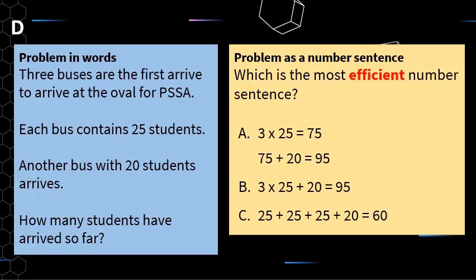Here's my last word problem: three buses are the first to arrive at the oval. Each bus contains 25 students. Another bus with 20 students arrives. How many students have arrived so far? Let's think about representing this in a number sentence in the most efficient way possible. With number A: 3 times 25 equals 75, then 75 plus 20 equals 95. It's correct, but probably the least efficient — it involves two sets of number sentences.